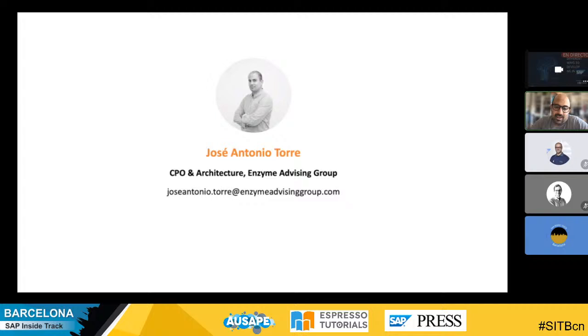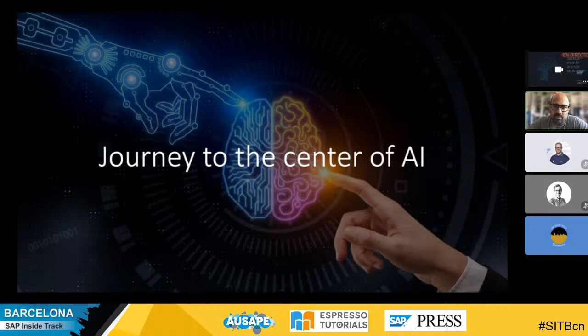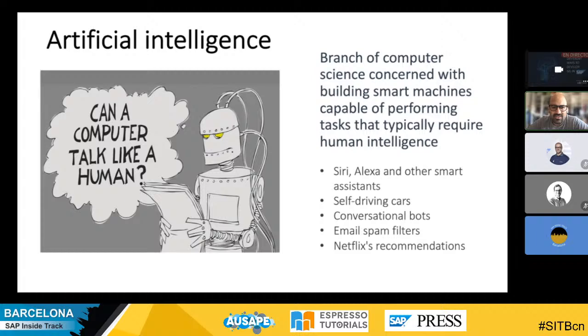I hope that this session will be interesting for you. Before talking about machine learning in SAP, we have to do a journey to the center of AI. The most important thing for us is to know what is artificial intelligence and also what is machine learning, because there are several concepts we have to understand before going deeper into the SAP world. Artificial intelligence is the branch of computer science concerned with building smart machines capable of performing tasks that typically require human intelligence.